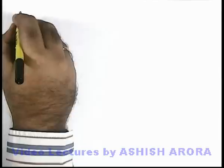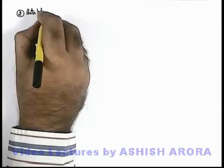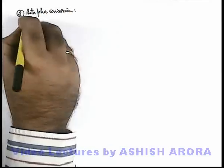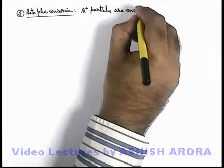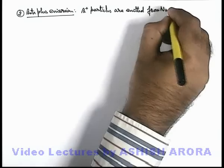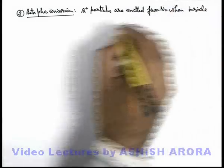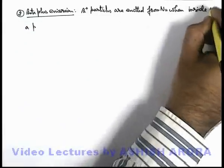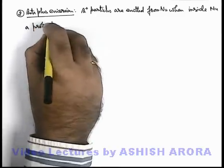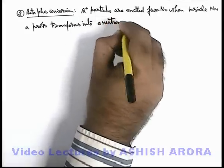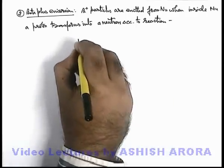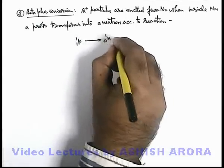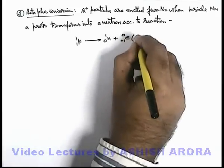Let's continue with the second type of beta emission, that is beta plus emission. Beta plus particles are emitted from the nucleus when inside a proton transforms into a neutron. According to the reaction, similar to what we wrote for beta minus emission, here a proton (¹p¹) transforms to a neutron plus a beta plus particle, which is actually a positron written as β⁺.